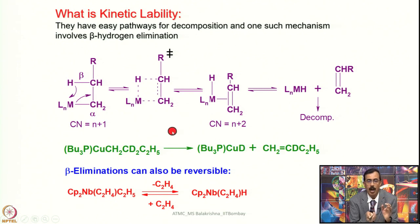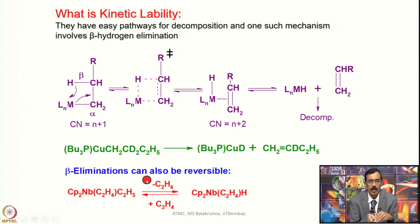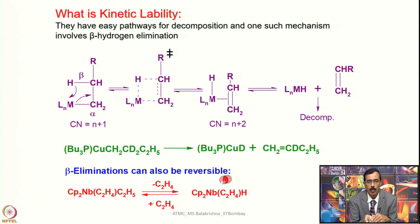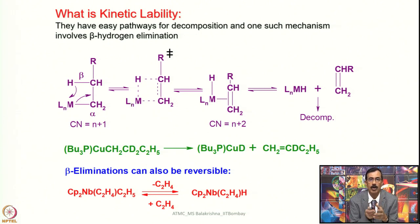Beta hydrogen elimination is reversible. For example, a niobium complex with two cyclopentadienyl groups, one ethylene and one ethyl group, on heating eliminates one ethylene and undergoes reverse beta hydrogen elimination to form a product. On addition of ethylene, the original complex can be regenerated. This reversibility is important — if beta hydrogen elimination were not reversible, the utility of metal complexes in homogeneous hydrogenation catalysis would not be possible.